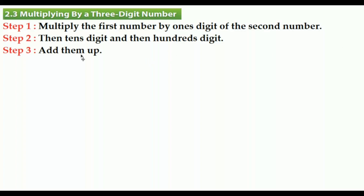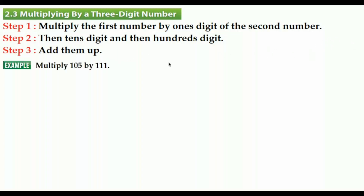We are going to start with the first rule, which is about three steps. The first step: multiply the first number by the ones digit of the second number. Then multiply the first number by the tens digit. Then multiply the first number by the hundreds digit of the second number. Lastly, you are going to add them all up.